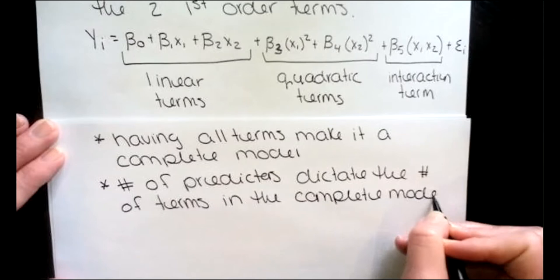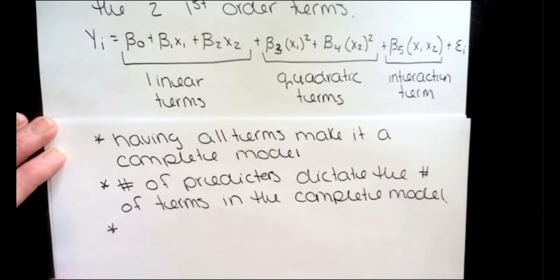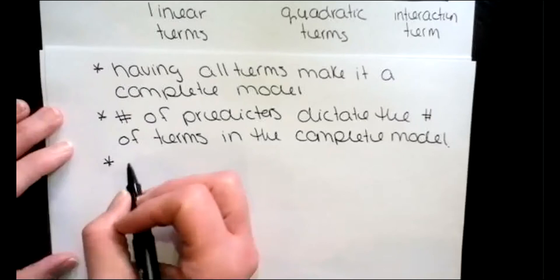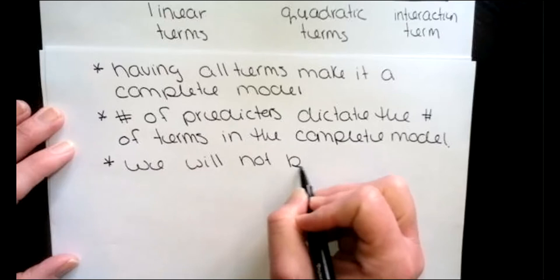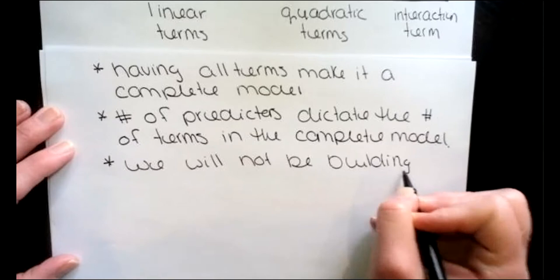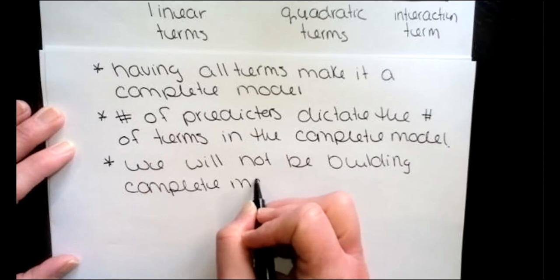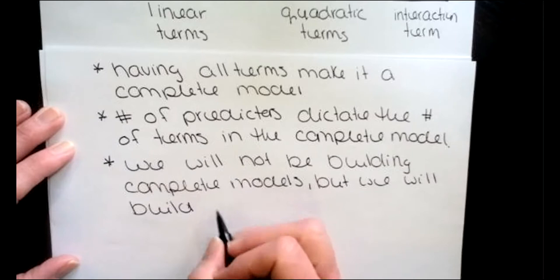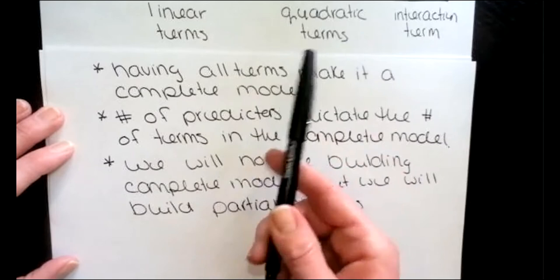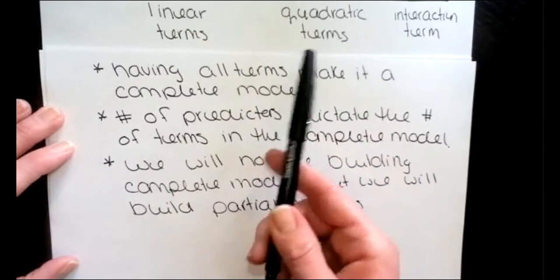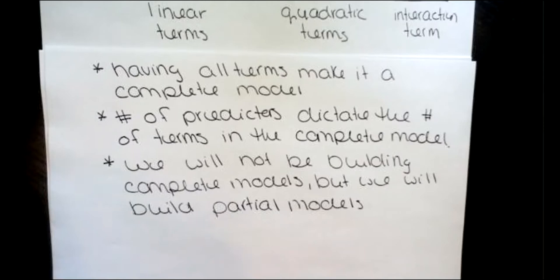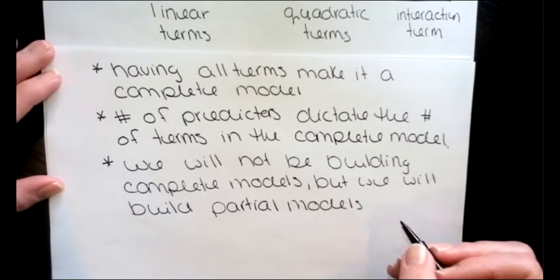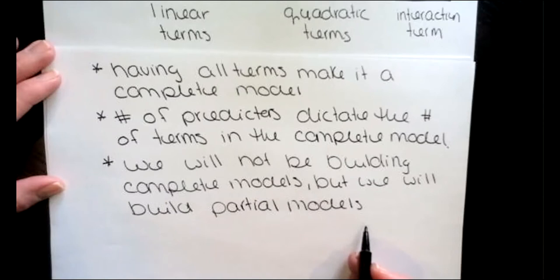We're not going to build complete models today — we're going to build what we call partial models, meaning we'll add maybe a quadratic term, maybe an interaction term or a couple of added terms. I'm not going to have you put in all of these terms because you can see how big the model gets very fast. We'll scale them down to a good model.